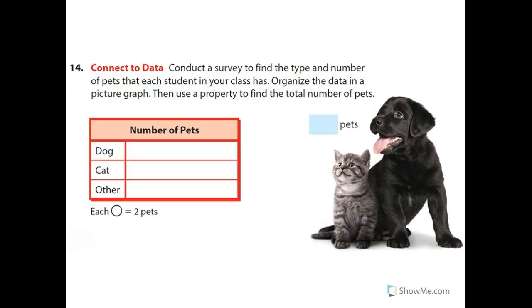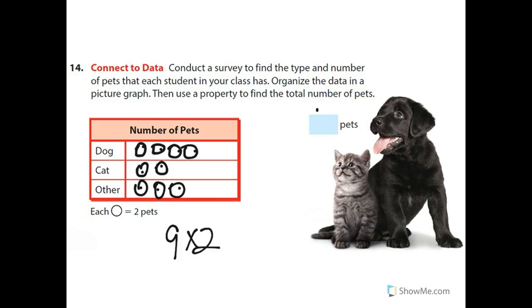Conduct a survey to find the type and number of pets each student in your class has. Organize the data in a pictograph, then use a property to find the total number of pets. I did my own survey — I want you to find the total. I counted nine circles, each representing two pets, so nine times two equals 18 pets.